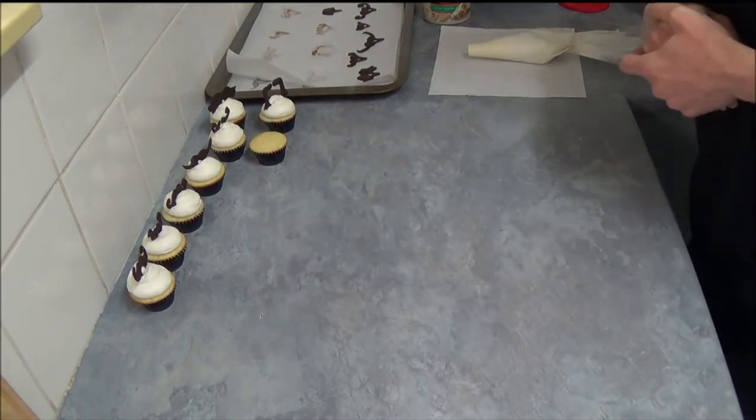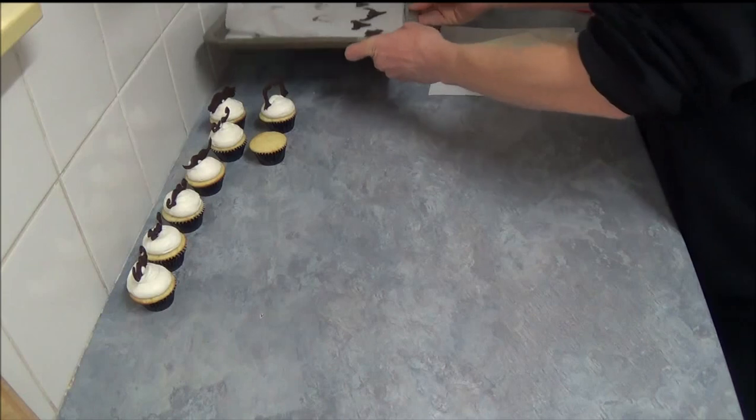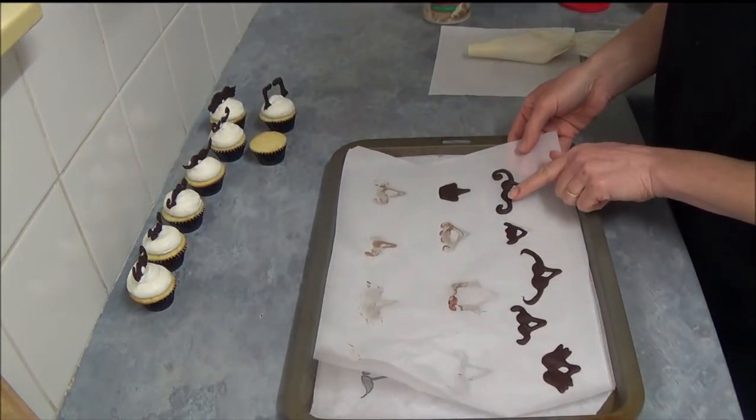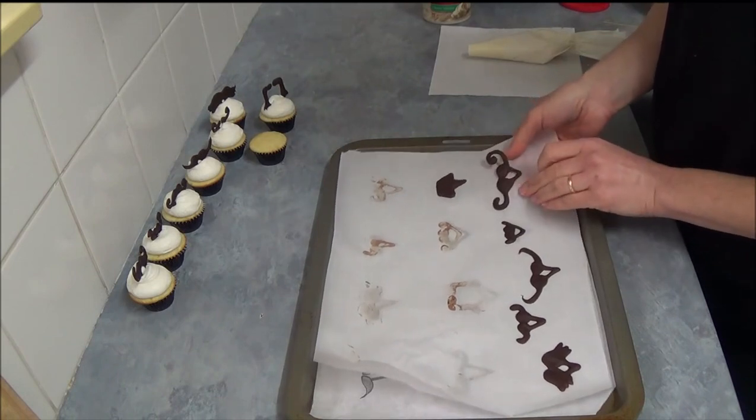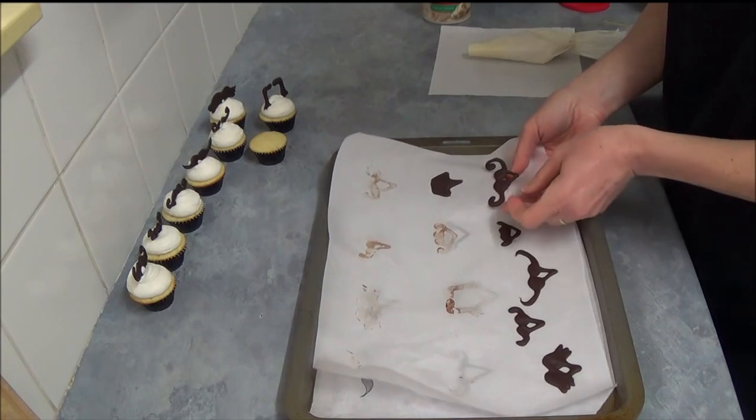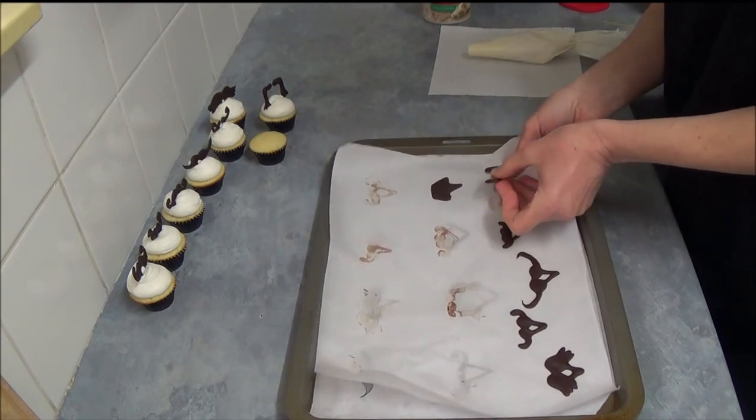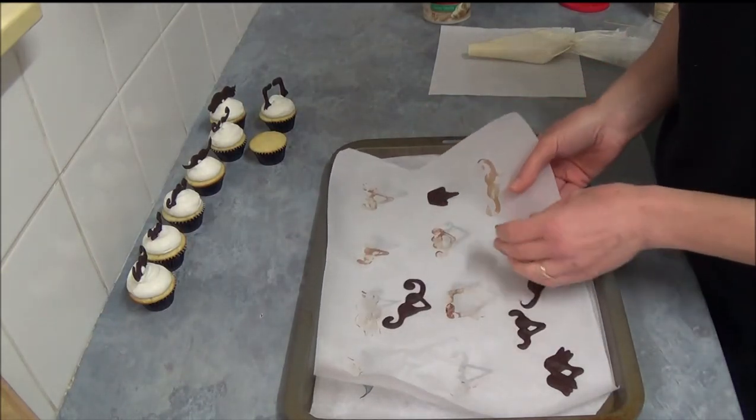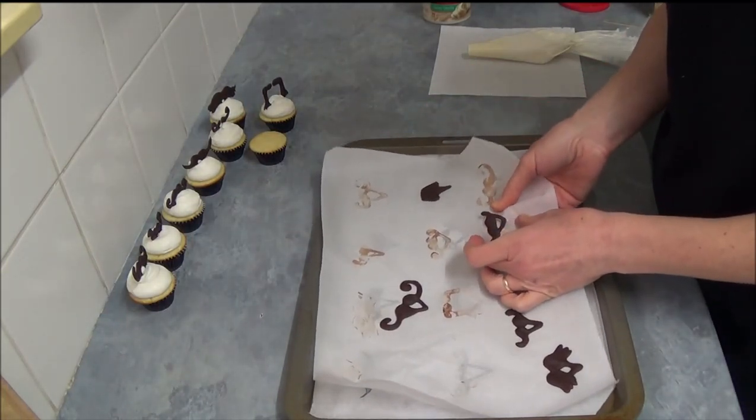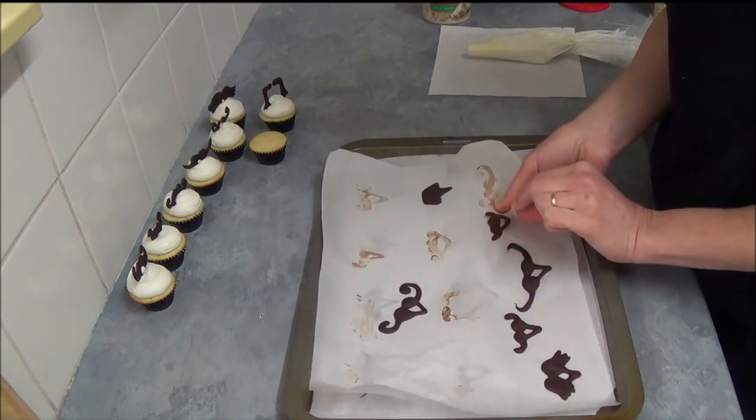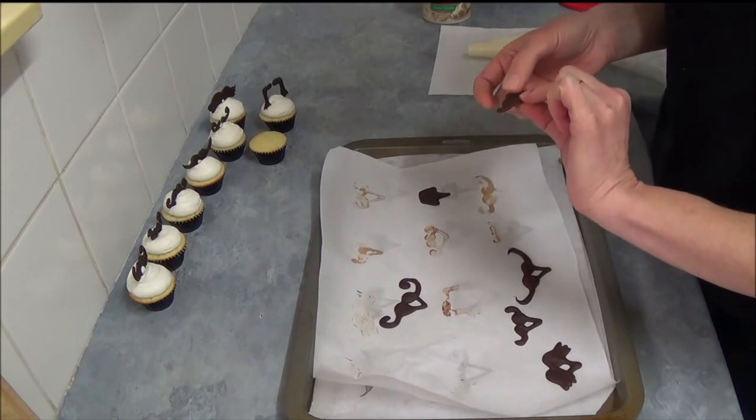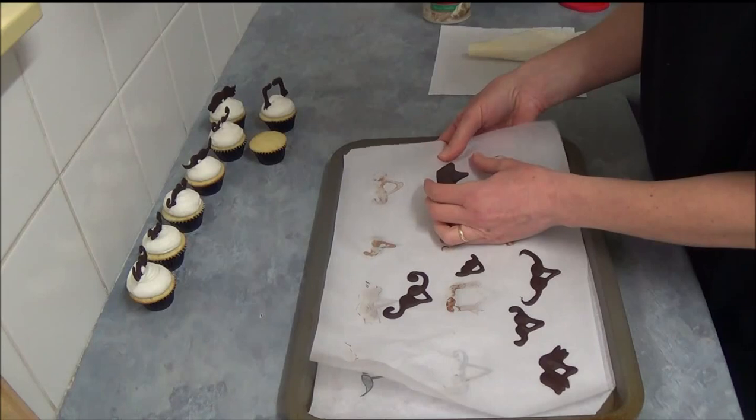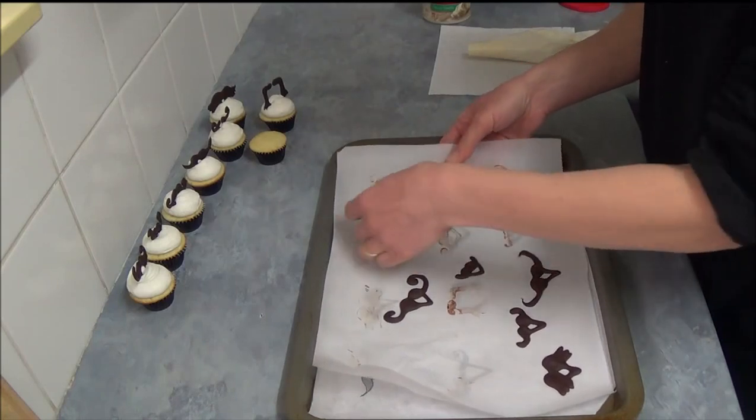After about 10 to 15 minutes in the refrigerator, as you can see our moustaches are set. With some more finer moustaches, what you do is push it from the underneath to make sure you don't break anything. Simply push it from the bottom, from the other side of the paper. And here you are with the miniature moustaches. We have Charlie Chaplin moustaches still left right here.